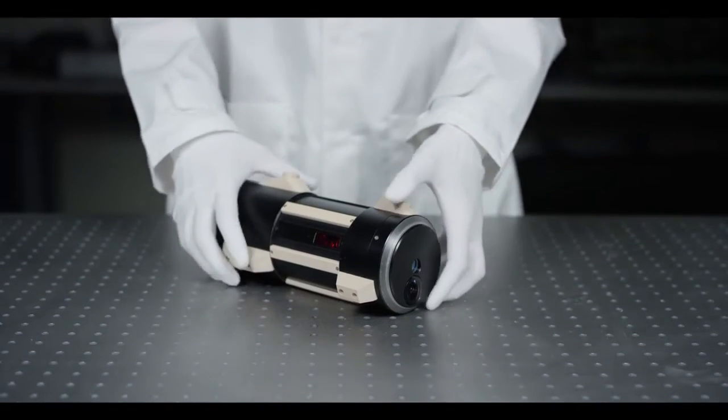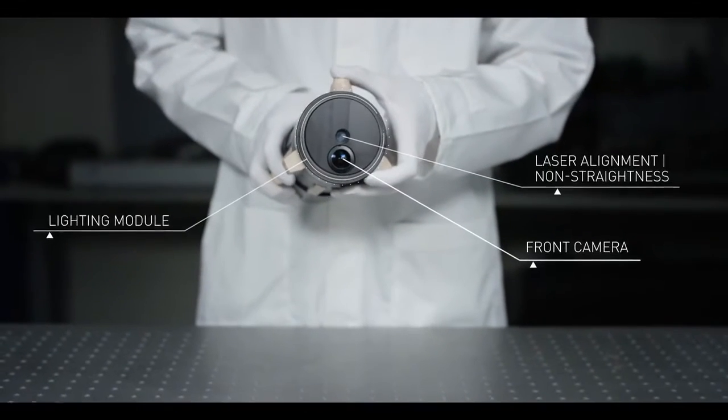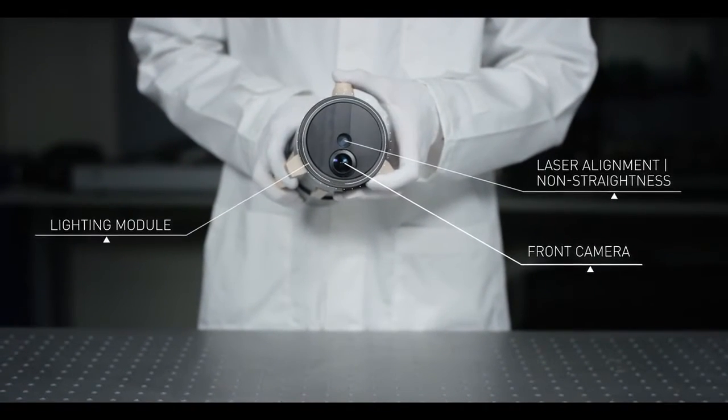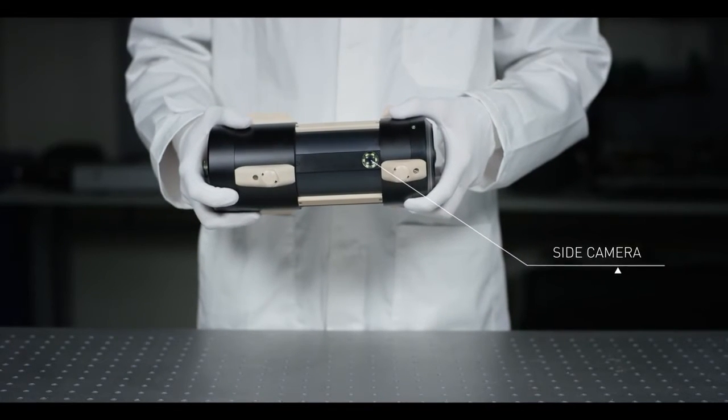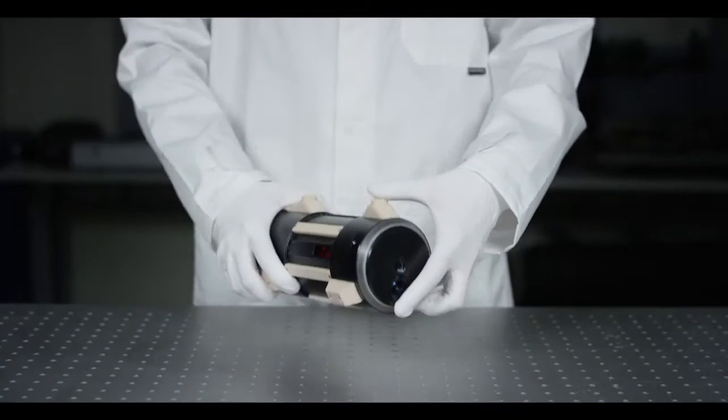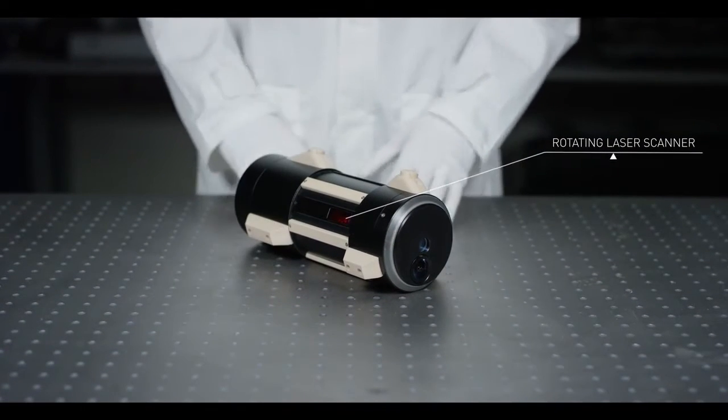Each device contains a non-straightness measurement channel, a frontal camera with LED array, a side camera for detailed panoramic view, and the main measurement channel, a rotating laser scanner.